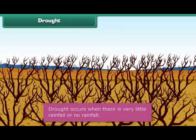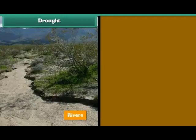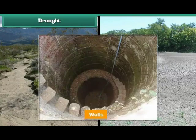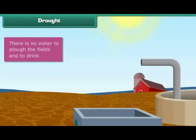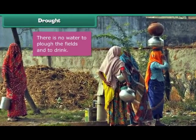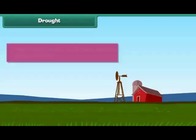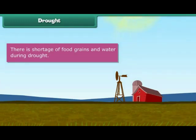Drought occurs when there is very little rainfall or no rainfall at all. During droughts, the rivers, ponds, wells and other water resources dry up. There is no water to plough the fields and even drinking water is hardly available. There is shortage of food grains and water.